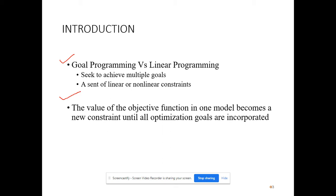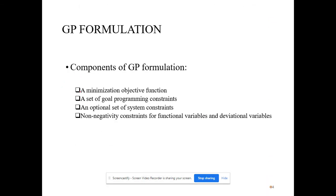In linear programming we had only one objective or one goal — to maximize or minimize the objective function. In goal programming we have multiple goals. The constraint can be linear as well as nonlinear, so it could be linear programming or nonlinear programming. Goal programming is an extension of both of them. The value of the objective function in one model becomes a new constraint until all optimization goals are met.